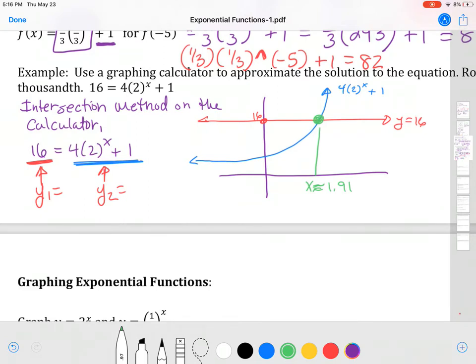So, the answer to this question is just x is equal to approximately 1.91 because it's where both sides of the equation cross. It's where they're the same.